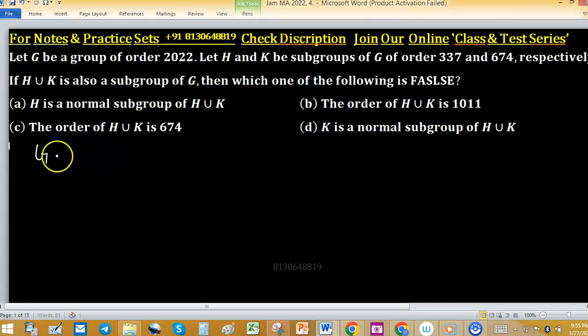It is given that J is a group of order 2022. H and K are subgroups of J having the order 337 and 674.